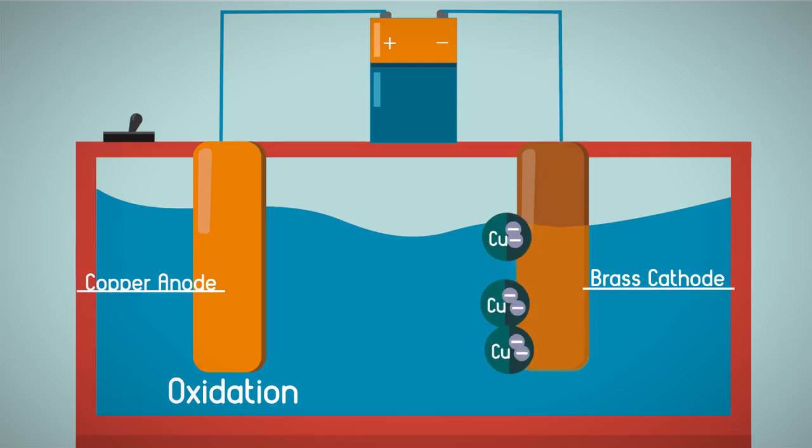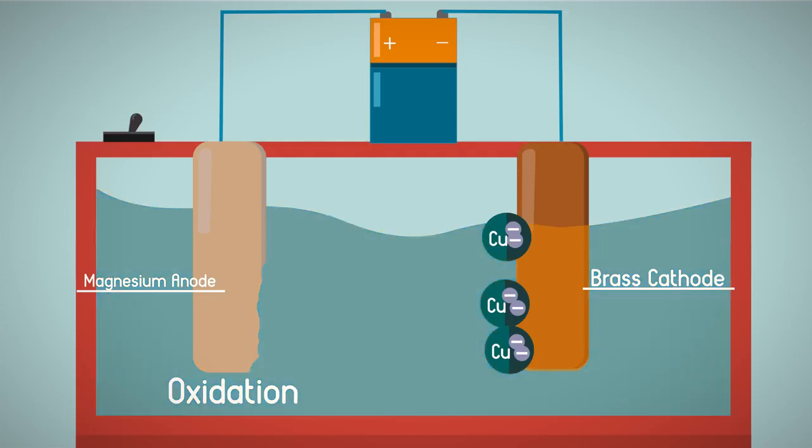The copper anode bar gradually dissolves to replenish the copper ions in the electrolyte solution, so the solution stays at the same concentration. If another metal was used at the anode, then the copper sulfate solution would get paler or less concentrated.